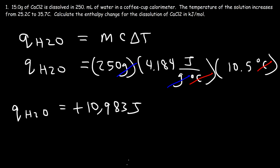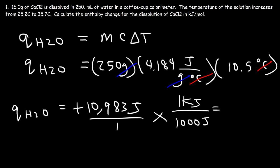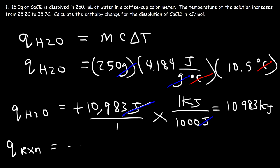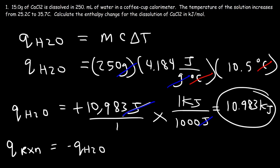We need the enthalpy change in kilojoules per mole, so we convert joules to kilojoules by dividing by 1000. This gives us 10.983 kilojoules. Since Q of the reaction equals negative Q of water, and the process is endothermic for the surrounding water molecules, it must be exothermic for the system. Therefore, Q of the reaction is negative 10.983 kilojoules.